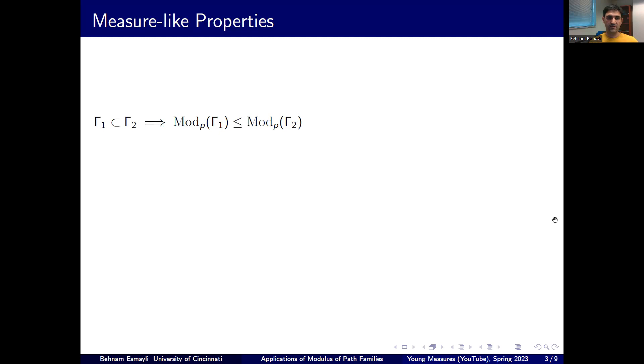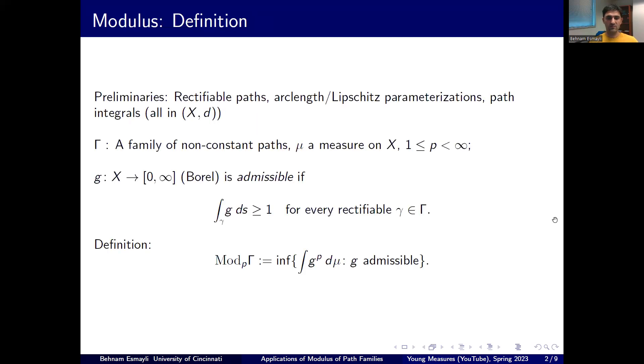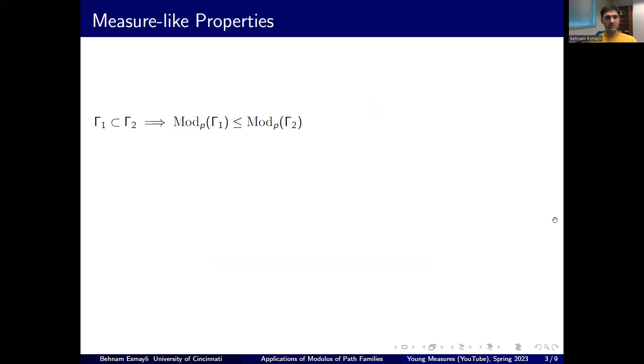Historically the inverse of this quantity 1 over mod p gamma, which is called extremal length, had been used. But due to the properties that you're about to see, it's more natural to actually work with the modulus as we've defined it.